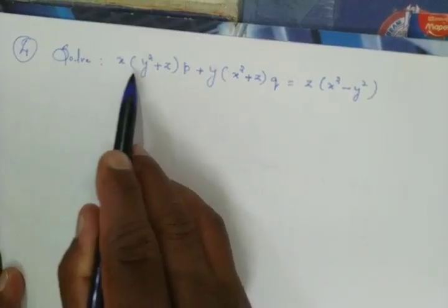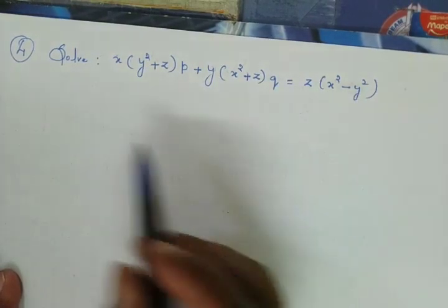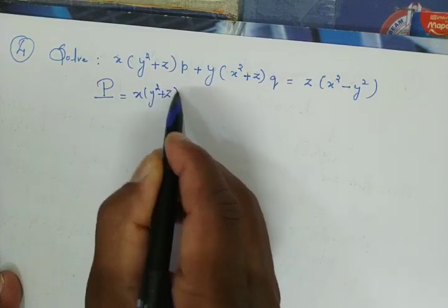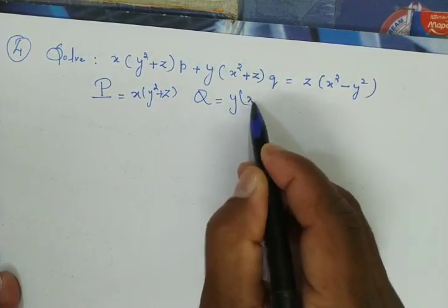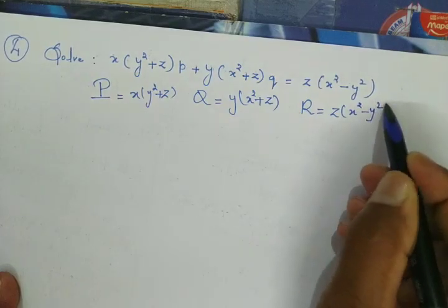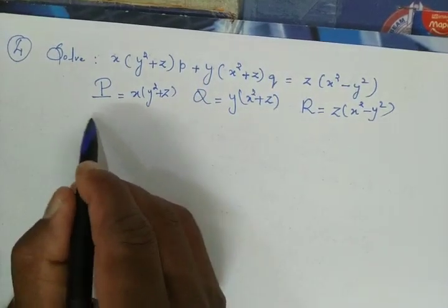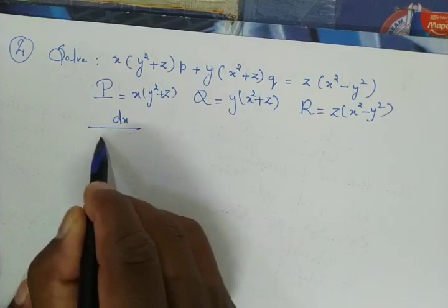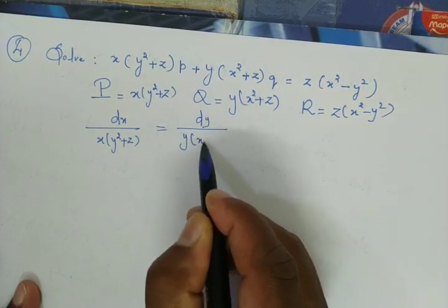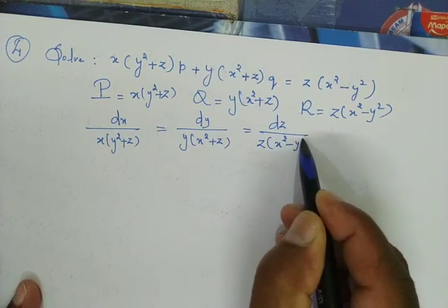The fourth problem is x(y² + z)p + y(x² + z)q = z(x² - y²). Here, capital P = x(y² + z), capital Q = y(x² + z), and capital R = z(x² - y²). The auxiliary equation is dx / [x(y² + z)] = dy / [y(x² + z)] = dz / [z(x² - y²)].